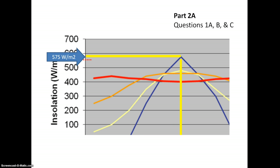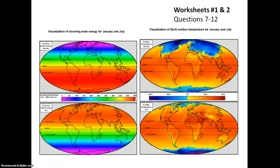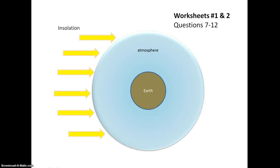Next, let's look at the maps for insolation and surface temperature in Part 2b. The map of insolation for January and July is on the left, and the map of surface temperature for January and July is on the right.